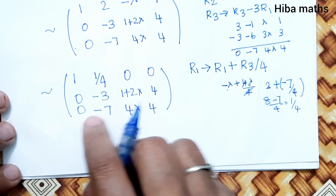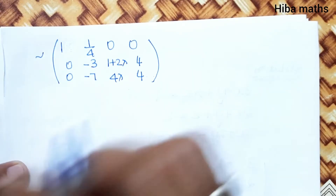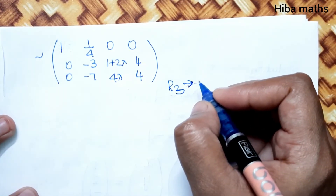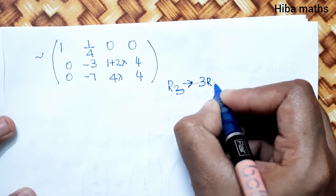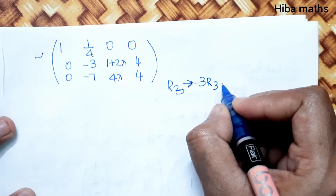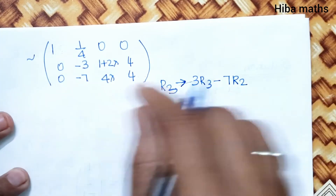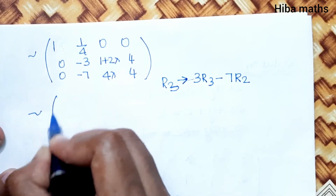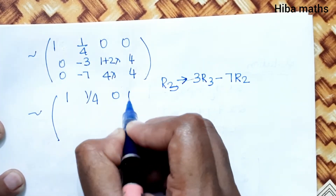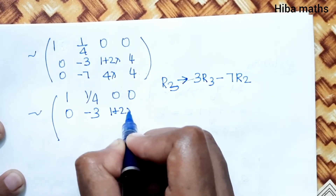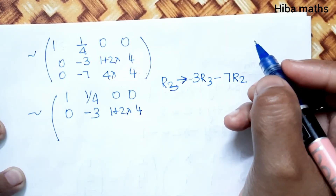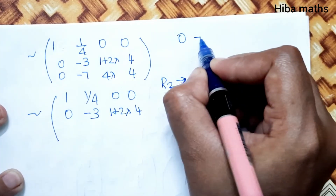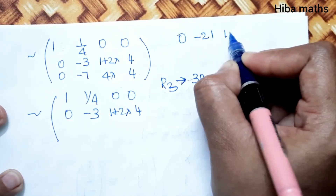Next, we perform R3 changes using 7 times R2 minus 3 times R3. Computing 3 times R3: [0, -21, 12lambda, 12]. Computing 7 times R2: [0, -21, 7 plus 14lambda, 28]. Subtracting to eliminate the second column entry.